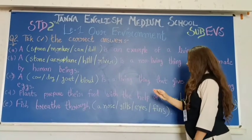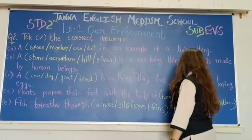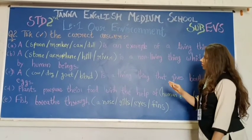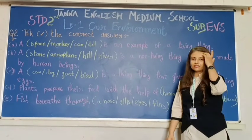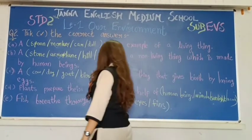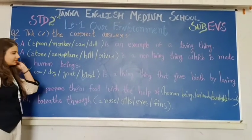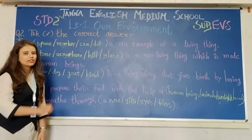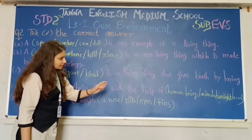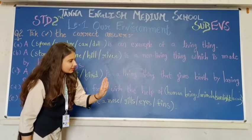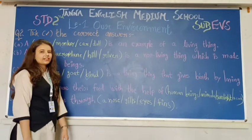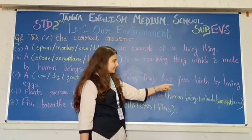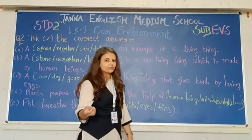Next question is: a dash is a living thing that gives birth by laying eggs. Your options are cow, dog, goat, bird. And your correct answer is bird. Next question: plants prepare their food with the help of dash. Your options are human beings, animals, sunlight, and a cook. Your correct answer is sunlight. Plants prepare their food with the help of sunlight. Write sunlight.